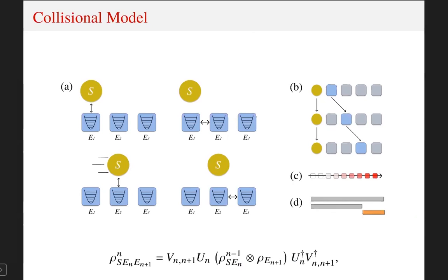In general, this is a numerically costly process as it scales with the number of units. For this reason, we use the notion of Markovian embedding seen in figure b. As can be seen at each step, we only care about the system and the unit the system is about to interact. For example, for the first step, we only care about the system and unit one. At the second step, we only care about the system and unit two, and so on.